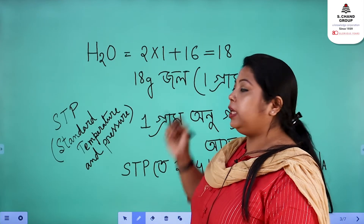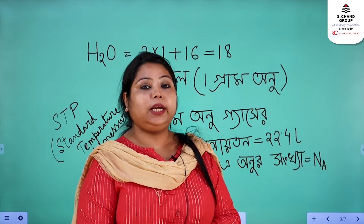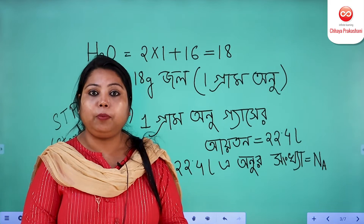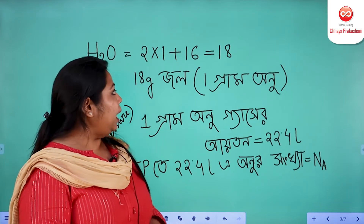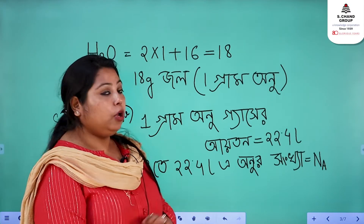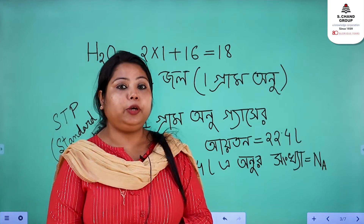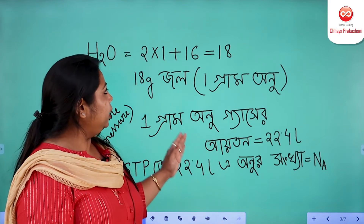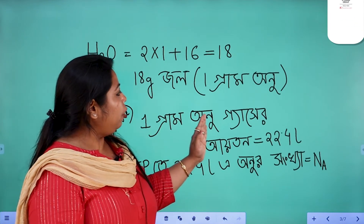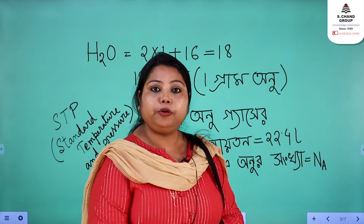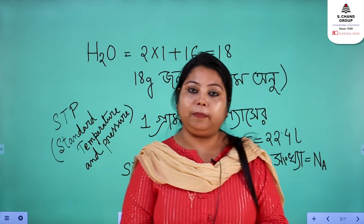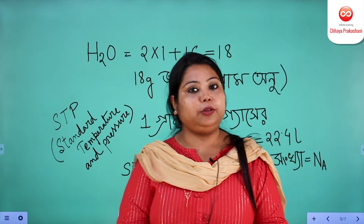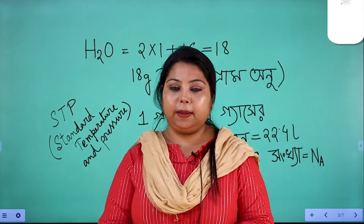So 2 × 1 = 2, plus atomic mass of oxygen = 16, so 2 + 16 = 18 grams. That means the molecular mass of water (H₂O) is 18 grams. In 18 grams of water, how many molecules can be present? The concept is now clear for this substance.